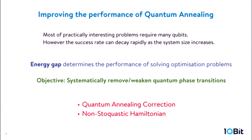One of the most important quantities in solving an optimization problem is the energy gap between the ground state and the excited state. If you can keep the energy gap large, you can finish the computation in a short time and keep the success rate high. But if the gap closes, the chance of making a mistake gets higher. Since gap closing is related to quantum phase transition, in order to improve performance we have to systematically remove, weaken, or avoid quantum phase transitions. This is the objective of this research.